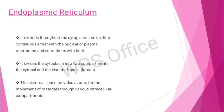The endoplasmic reticulum extends throughout the cytoplasm and is often continuous with either the nuclear or plasma membrane, and sometimes with both. It divides the cytoplasm into two compartments: the cytosol and the cisternal space, or lumen. The cisternal space provides a road for the movement of materials through various intracellular compartments.